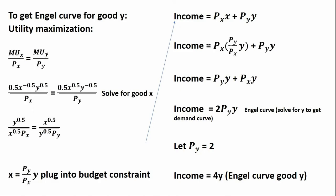To get the Engel curve for good Y, follow the same steps: set up the utility maximizing condition, setting the marginal utility per dollar of good X equal to the marginal utility per dollar of good Y. But this time, we simplify the expression for good X.